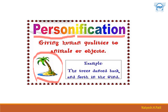For example, you can see this tree here, and the sentence says: 'The trees dance back and forth in the wind.' Dancing is a human quality. These trees were just moving because of the wind, but the writer has said the trees 'dance.' We use personification to make a poem or any other piece of writing very attractive and entertaining.